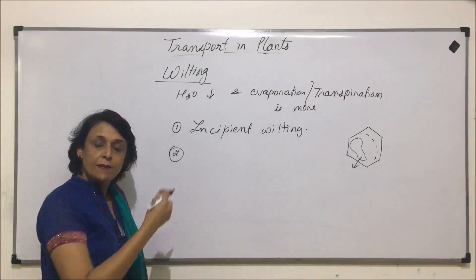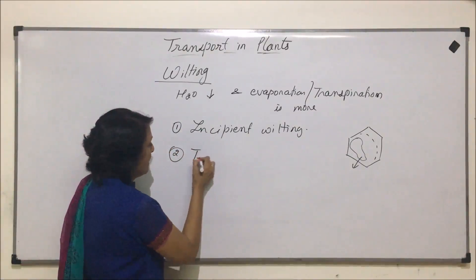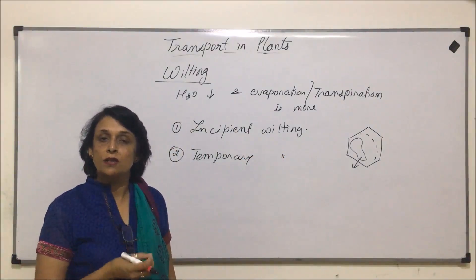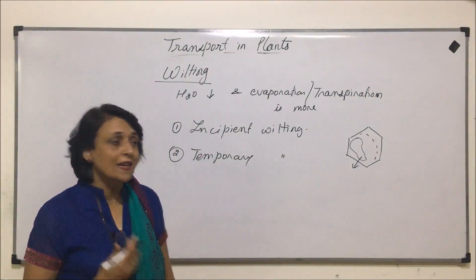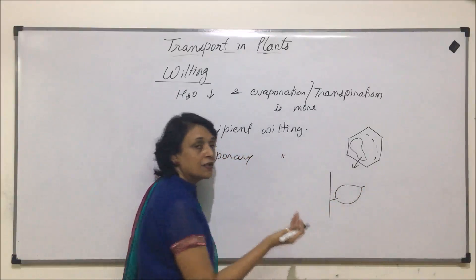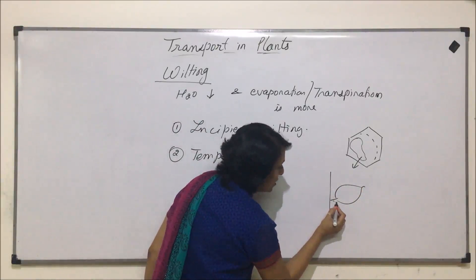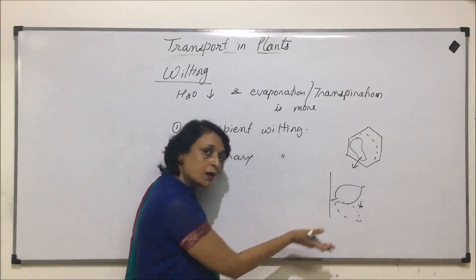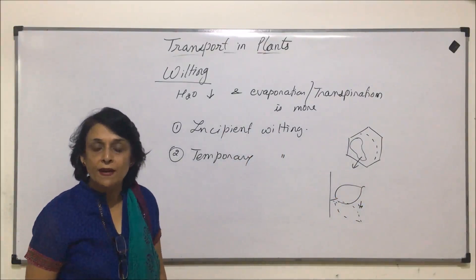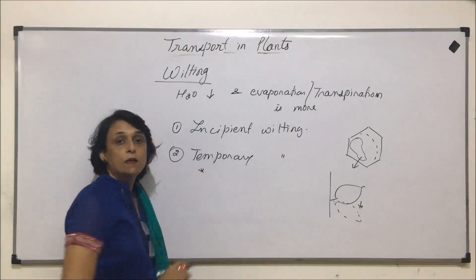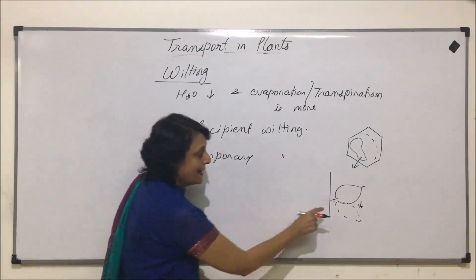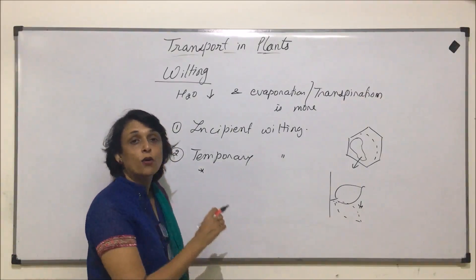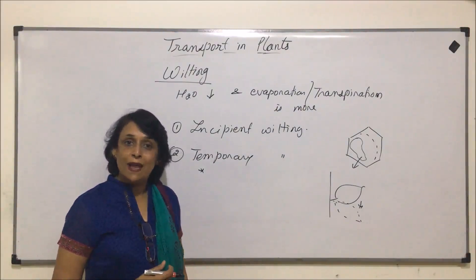If the same situation continues, it is followed by temporary wilting, where we begin to see the signs or symptoms. The symptom is drooping of the leaf. Normally a leaf remains flat, upright, and stretched; in drooping condition, the leaf droops down due to wilting. This is temporary because if water is given to the plant at this time, it regains its turgidity and comes back to its normal position. That means the cells retain the property to become deplasmolyzed.